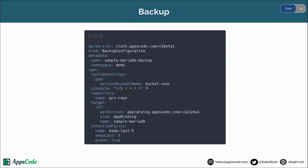Here we are providing the service account name that we created earlier, which is bucket-user, and that is bound with the IAM service account. Stash will use this service account to backup and restore the data. Here we are providing the repository which is gcs-repo, and the target of the backup — in our case it is sample-mariadb, which is the AppBinding name for the MariaDB database. In the retention policy we specify that it will keep the last five snapshots and the rest will be deleted. Let's create this backup configuration.